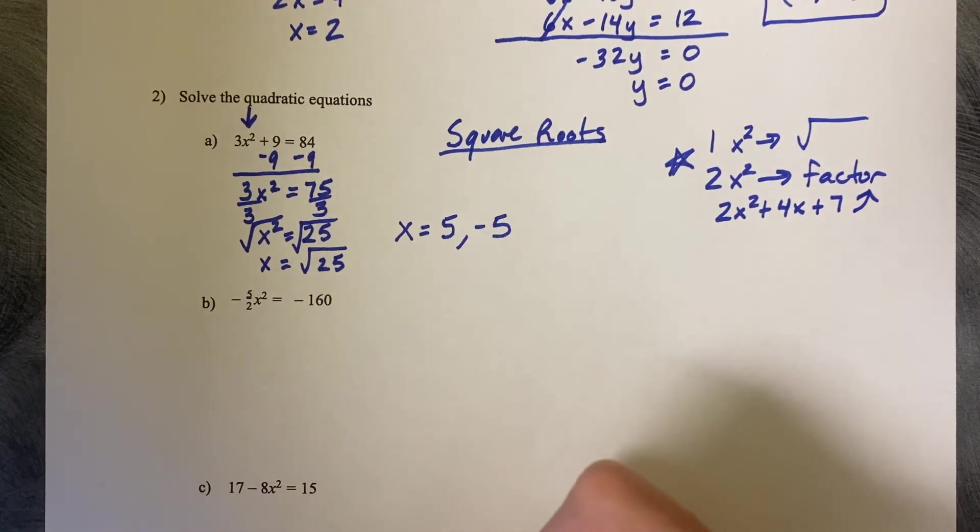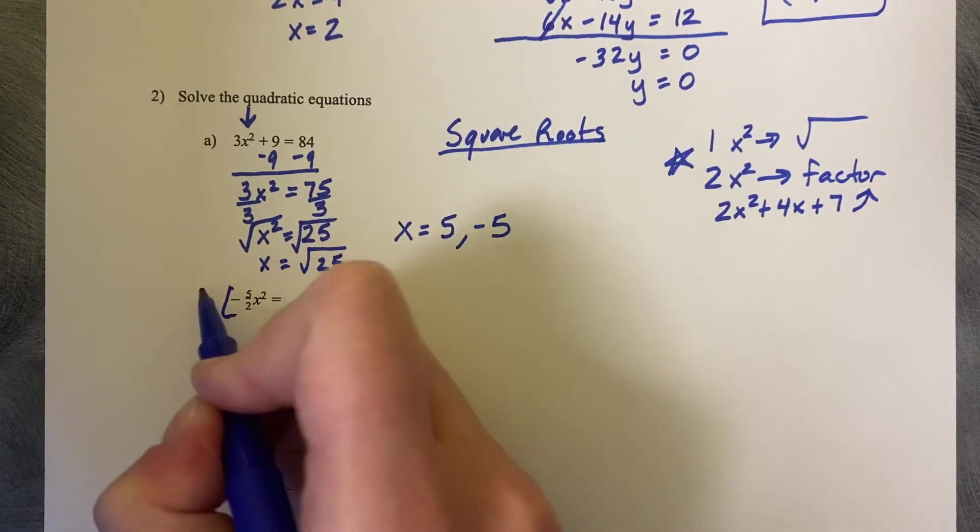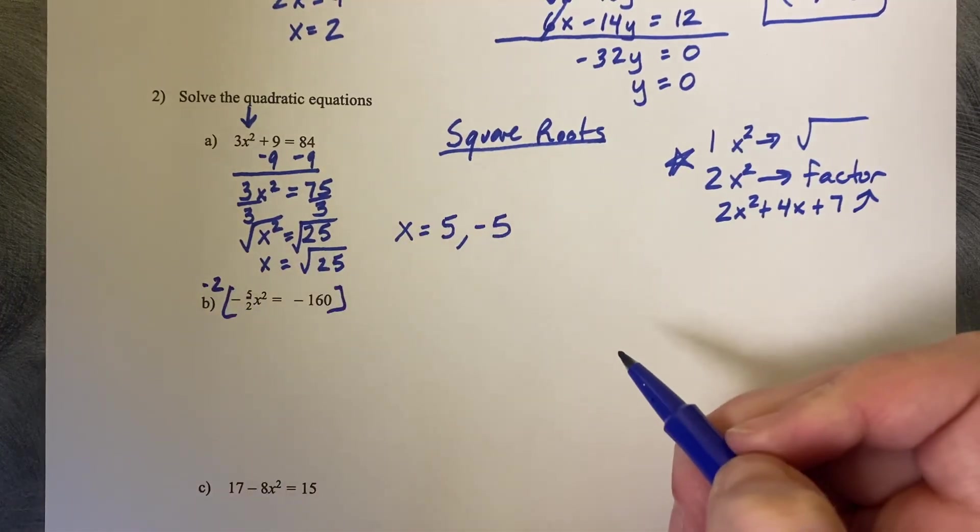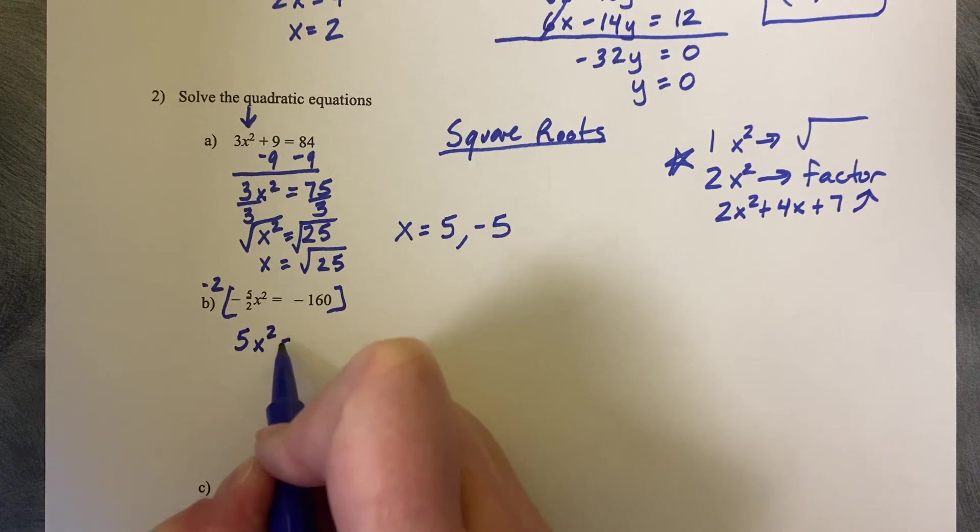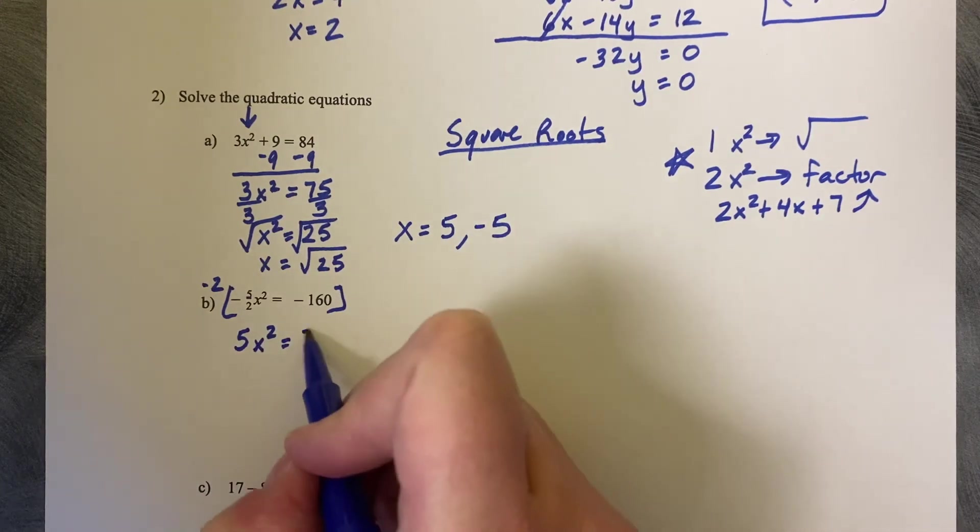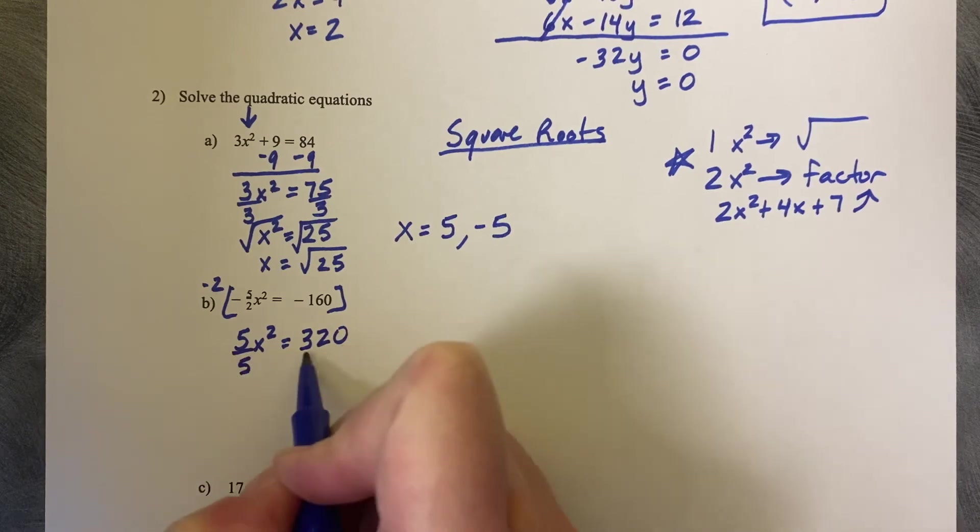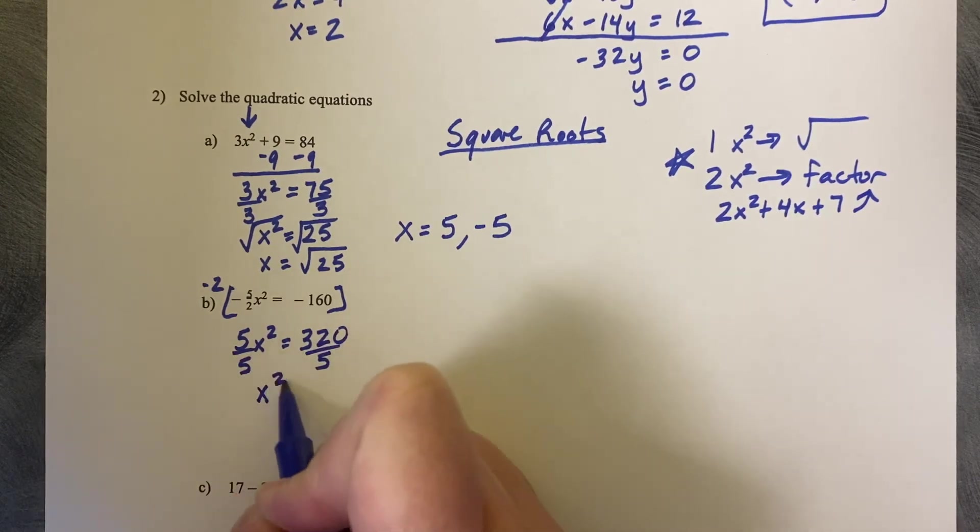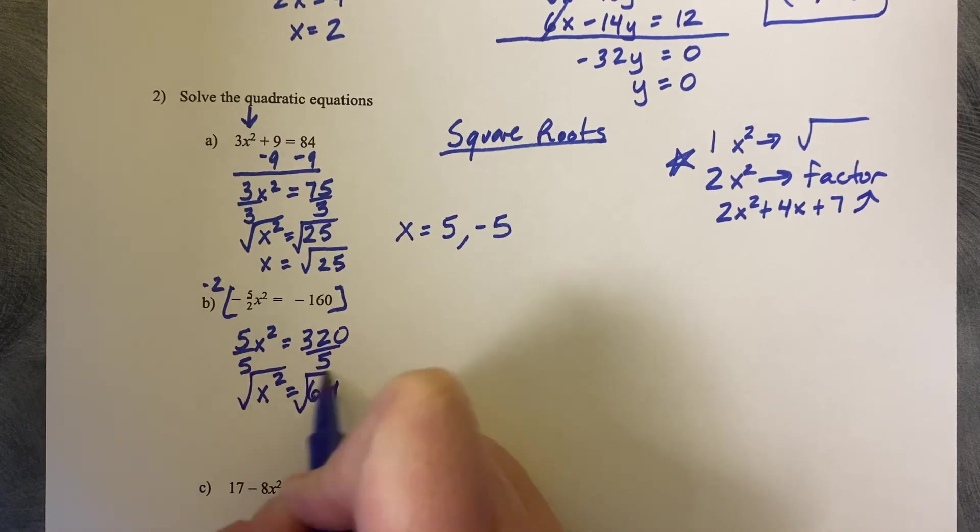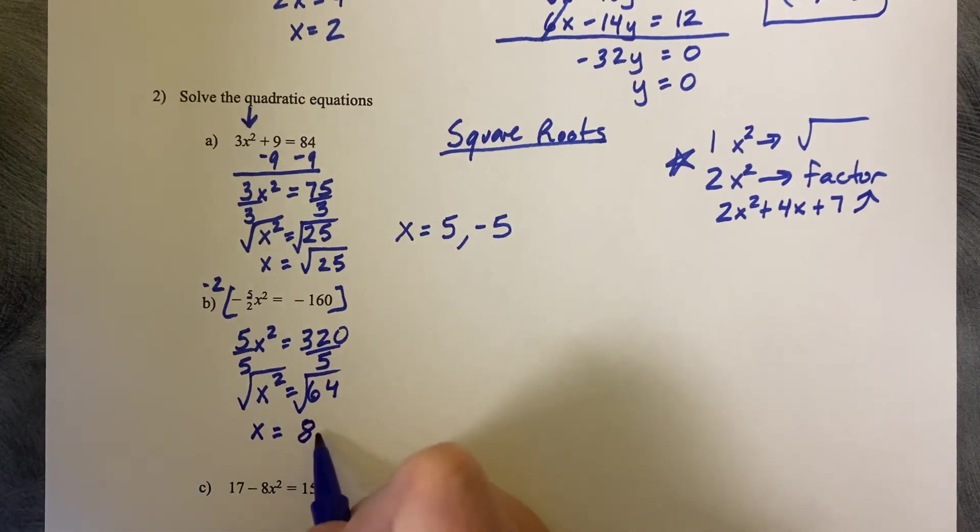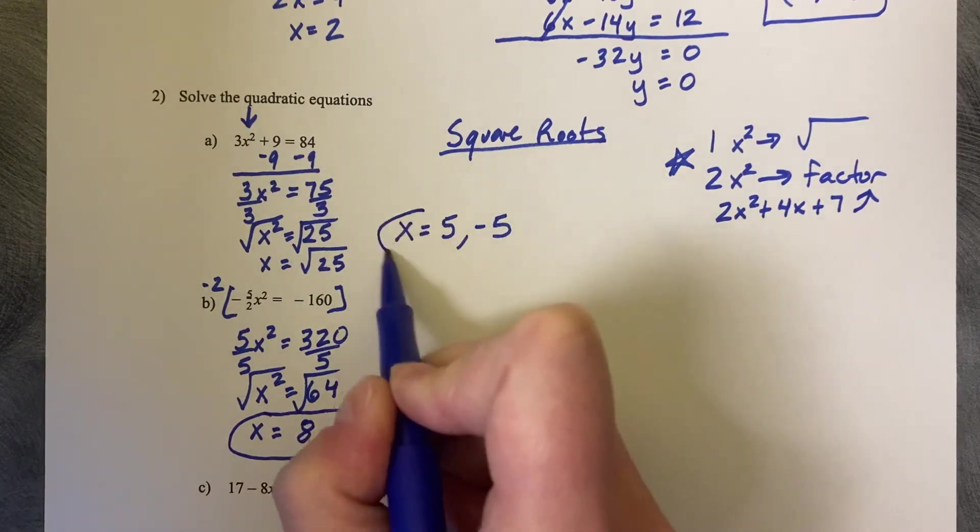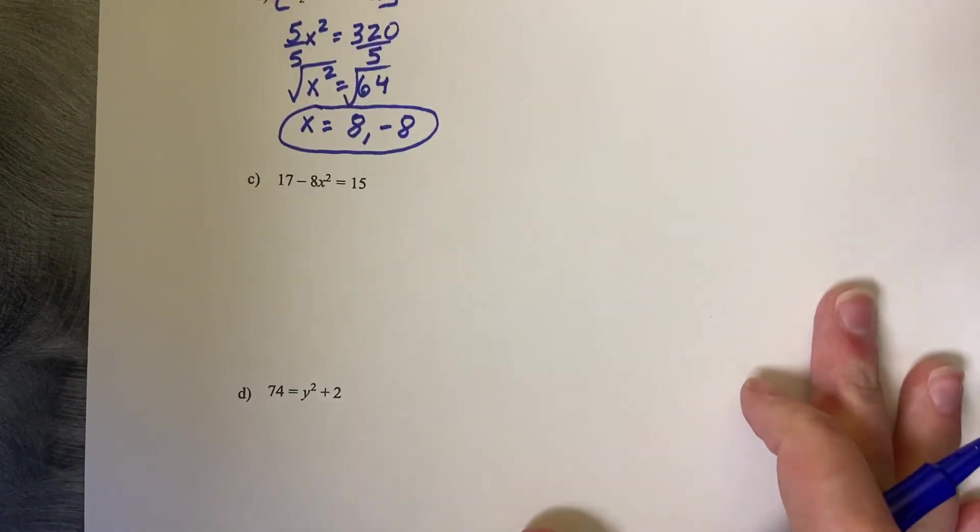Pause this video and try the next three problems on your own. So in this second one, I'm going to multiply through by negative 2 to get rid of my denominator. So then I've got 5x squared and then negative 160 times negative 2 is 320. Divide by 5. x squared equals 64. Square root of both sides. What's something squared that makes 64? Both 8 and negative 8.